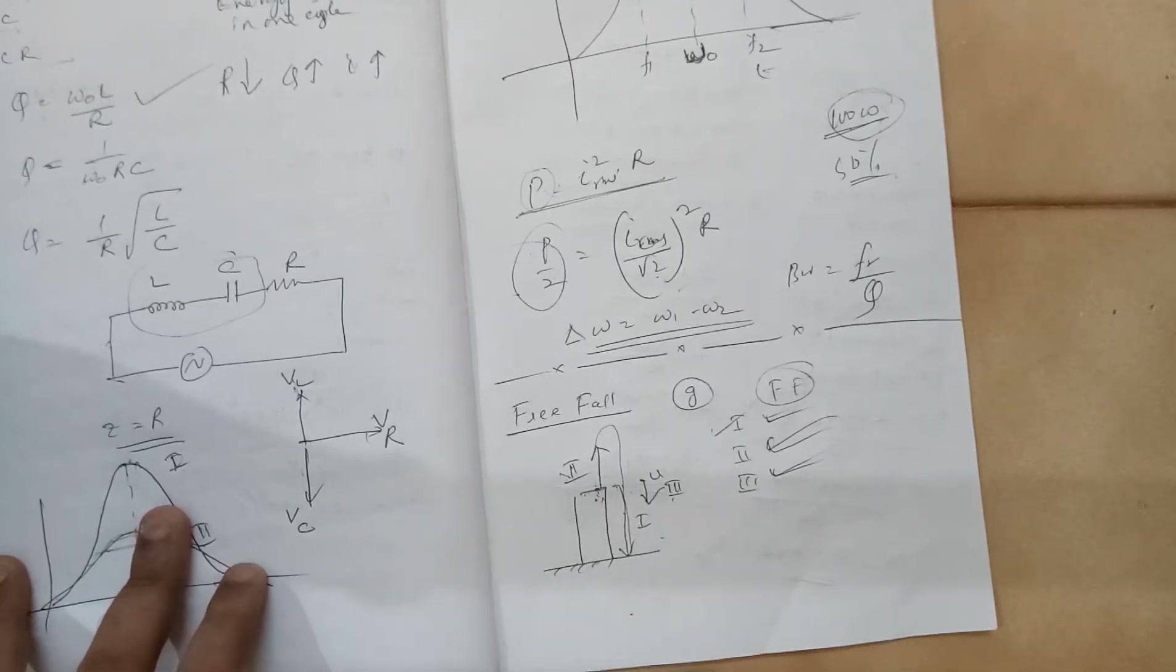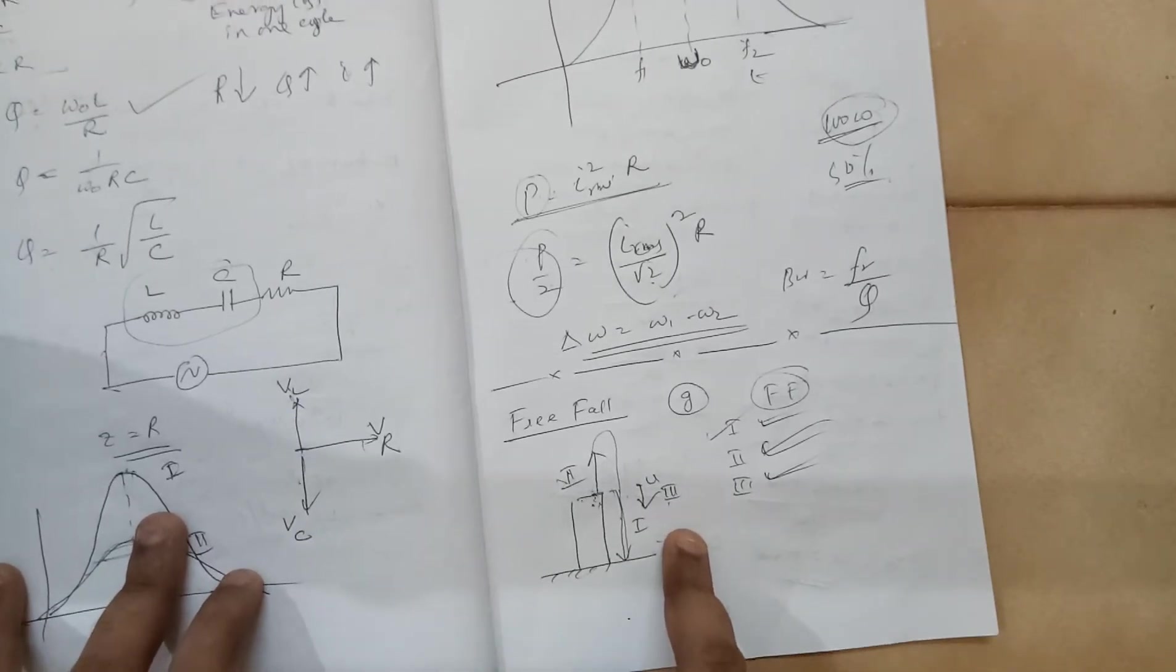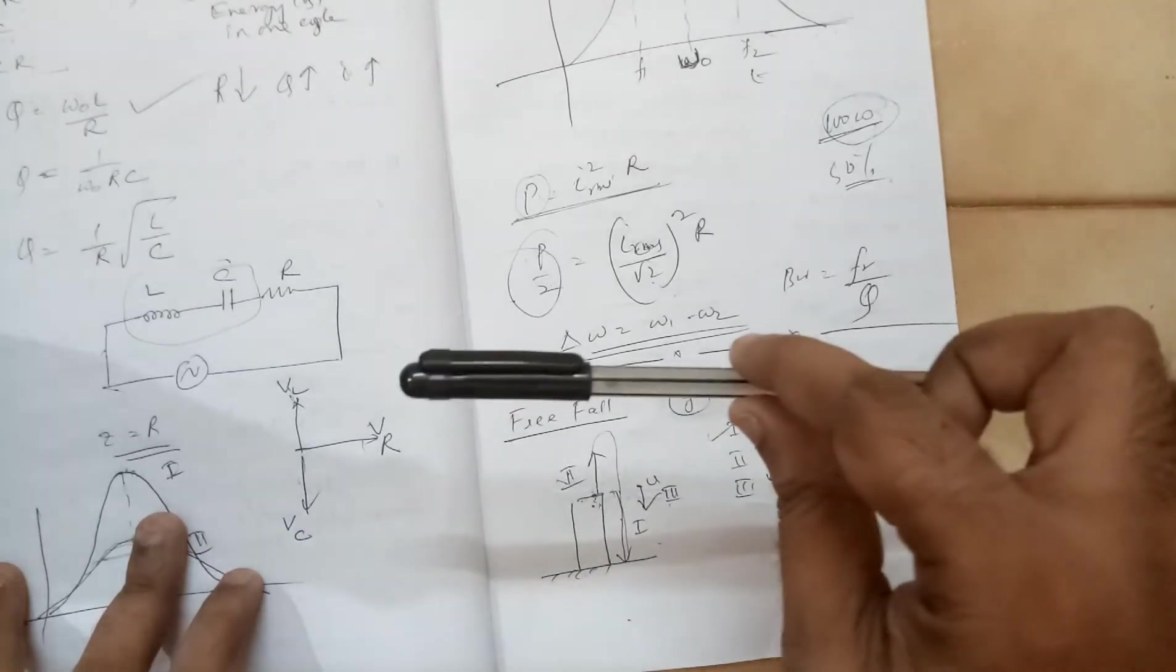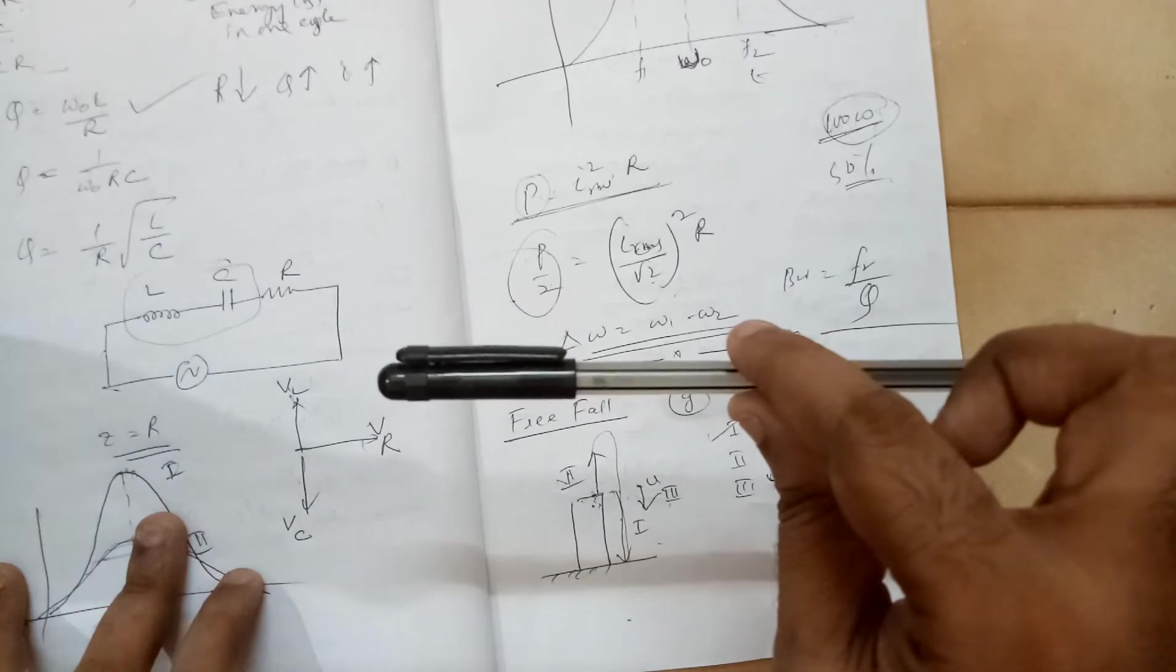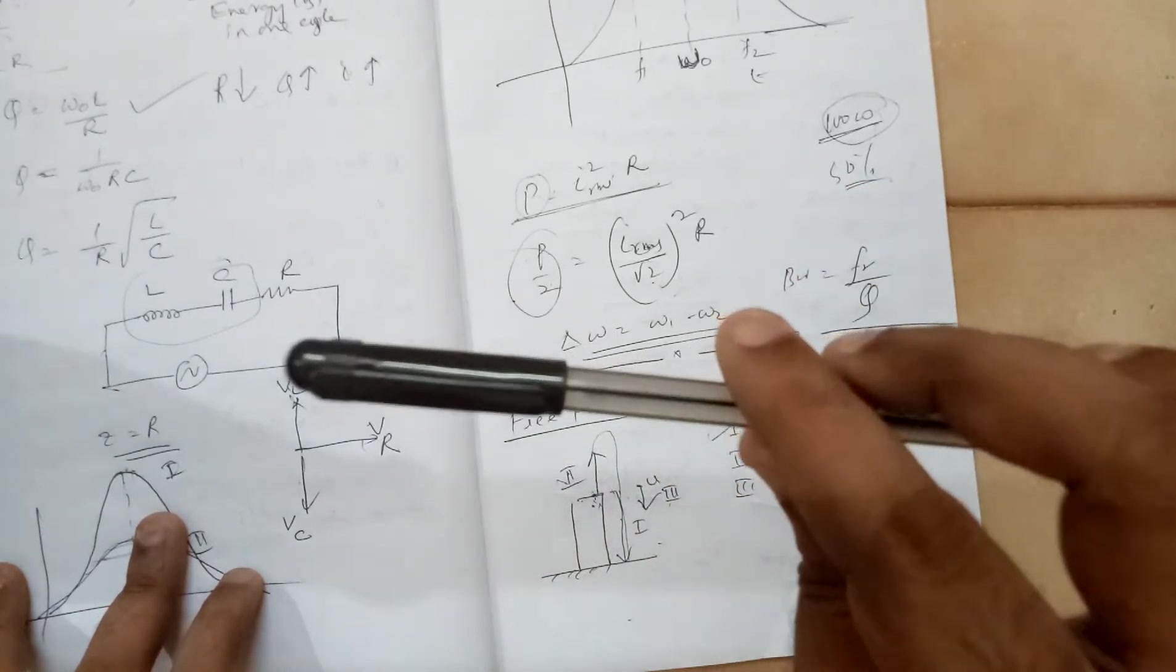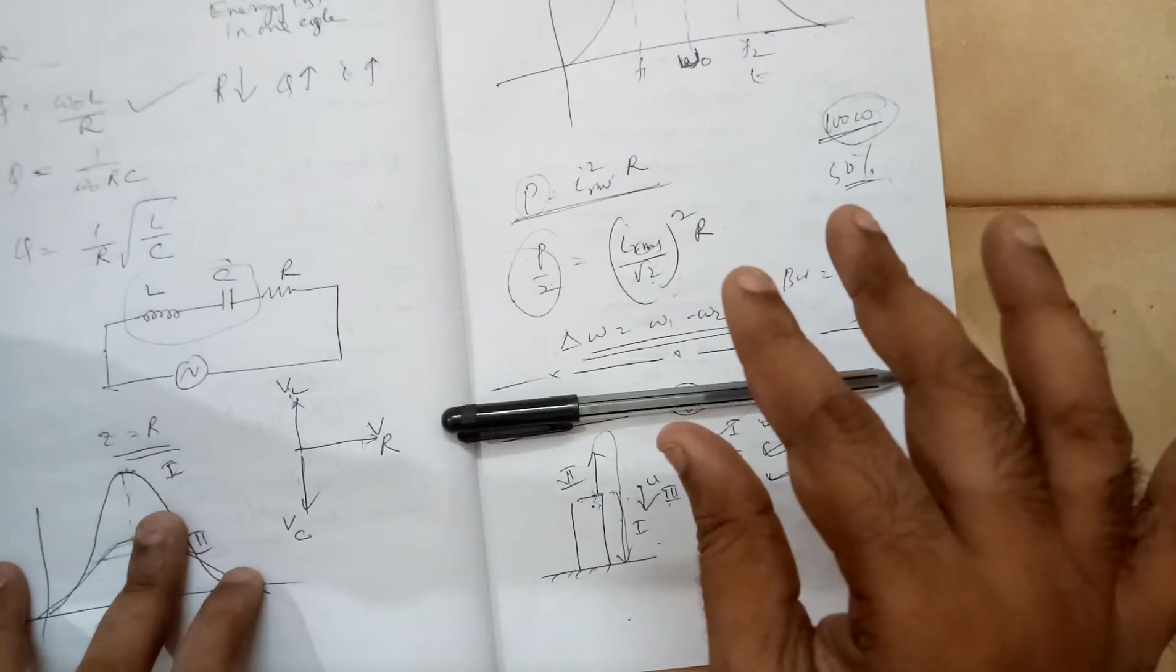Similarly is the case with the third case where you are throwing the object in the downward direction. Case 1 was like this. I am holding this pen, simply dropped it. Case 3 is pushing it down.